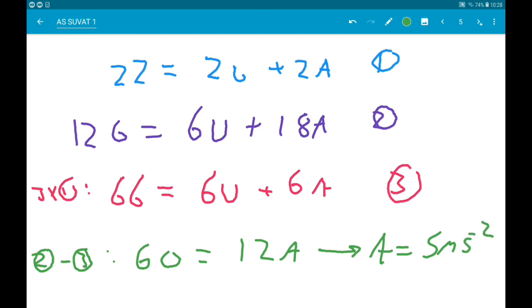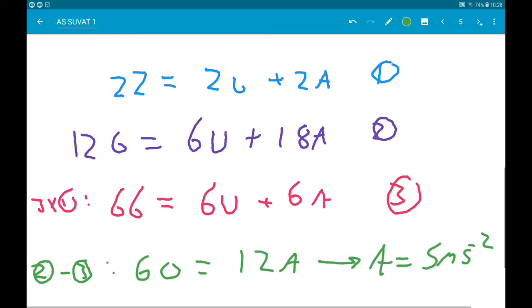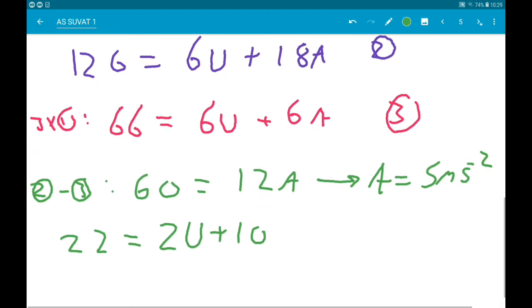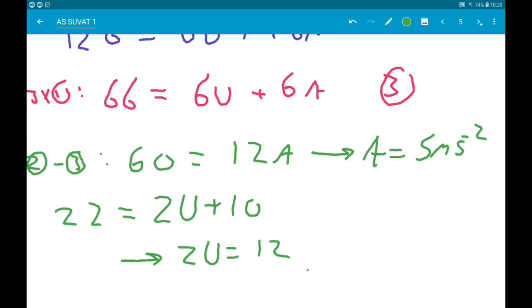Okay, now that we know A, put that into one of the equations to get U. So I'm going to put it into number 1. So now we know 22 equals 2U add 10. So 2U is 12. U is 6 metres per second. It's very important that you include the units of your answer, otherwise it doesn't mean anything.